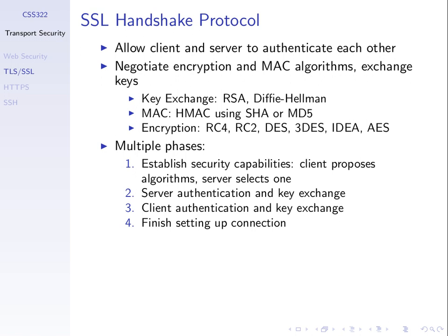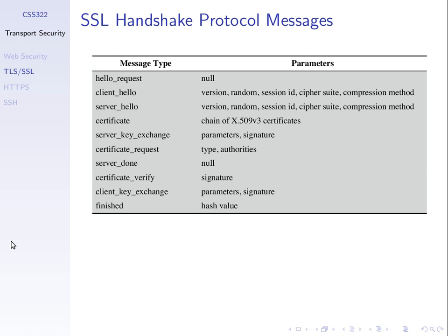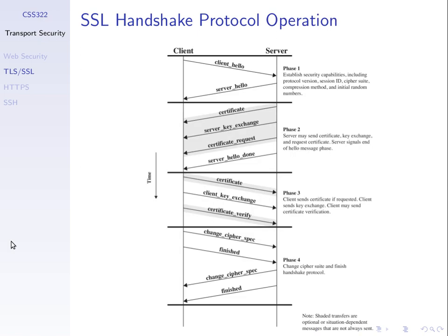There are different parameters that you can choose from. SSL doesn't force you to use a particular algorithm — you can choose, and that's what we saw yesterday. The four basic phases are: determine the capabilities of each other, authenticate the server, authenticate the client, and finish the handshake. There are different types of messages; we saw some of them yesterday in the Wireshark capture. Let's see them in this exchange.